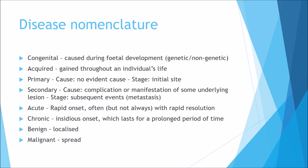Acute means rapid onset and often — though not always — rapid resolution. For example, hypersensitivity and allergies have a rapid onset but can also quickly disappear. Chronic, on the other hand, is insidious — a long-period onset that lasts for a prolonged time, such as chronic heart disease, which won't just go away overnight. Benign means a condition is localised and not growing aggressively, while malignant means it is spreading and invading surrounding tissues.